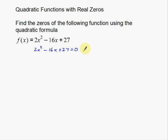Now the reason you do that is just to make sure everything is in order — everything is where it's supposed to be. You've got your x squared term here, then your x term, and then your constant. So we have the a number, the b number, and the c number. Let me label those: a is 2, b is negative 16, c is 27. We're going to plug that into the quadratic formula to solve.